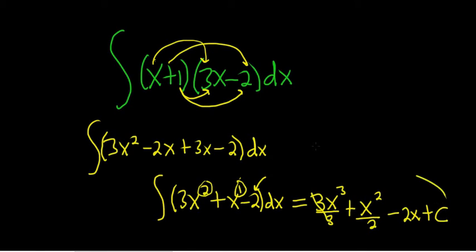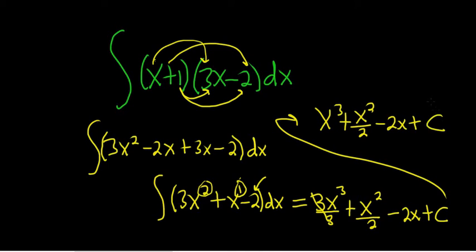The 3's here cancel. So we end up with x cubed plus x squared over 2 minus 2x plus C, which is our arbitrary constant of integration.